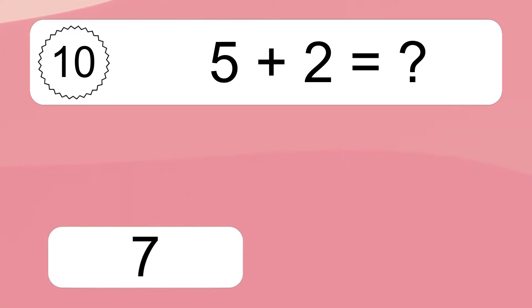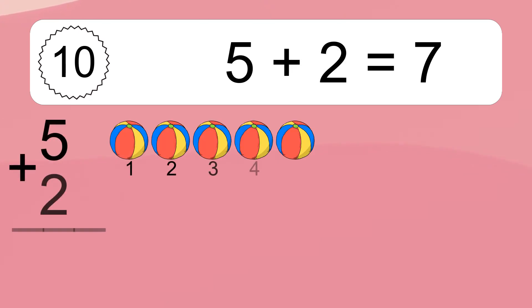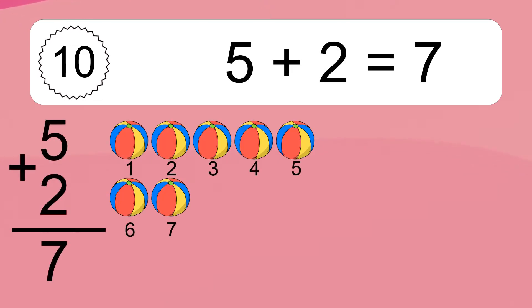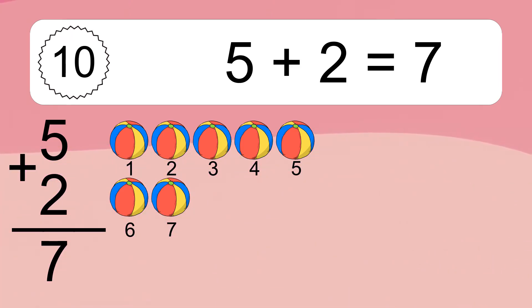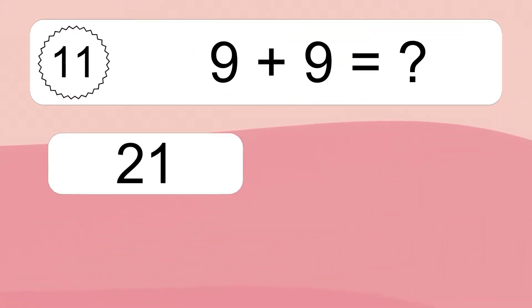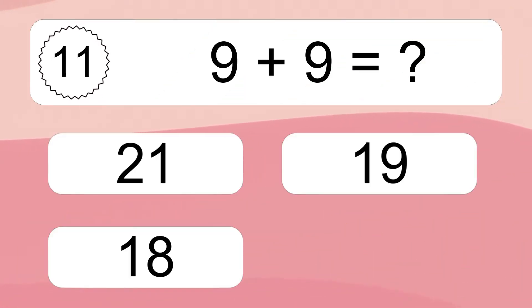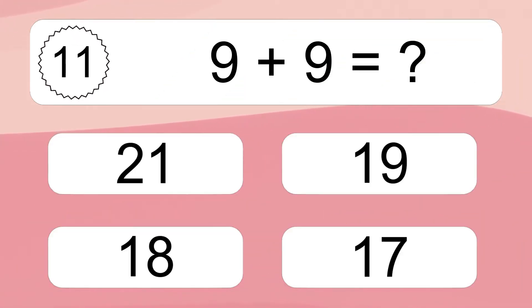5 plus 2 equals what? 5 plus 2 equals 7. Let's count it: 1, 2, 3, 4, 5, 6, 7.